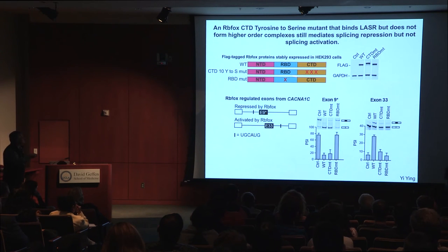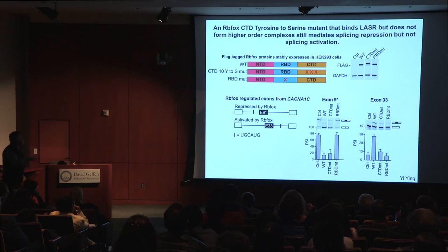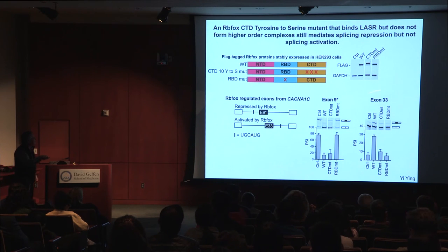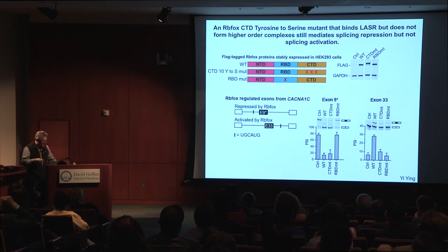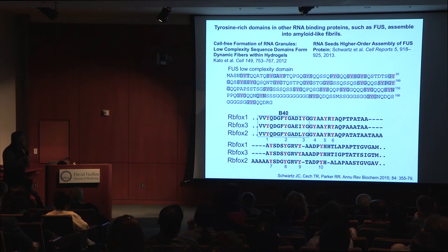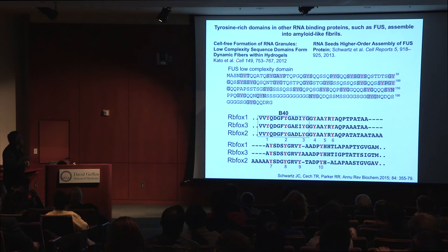Interestingly, these tyrosine mutants still bound the LASER complex — pulling down all the same proteins — but preventing higher-order assembly of the RBFOX-LASER unit complex. Testing with reporter genes, Yi found that the tyrosine mutant still repressed exon 9*, so higher-order assembly was not needed for repression. However, exon 33 was not activated by the tyrosine mutant, indicating that activation of this exon requires higher-order assembly.